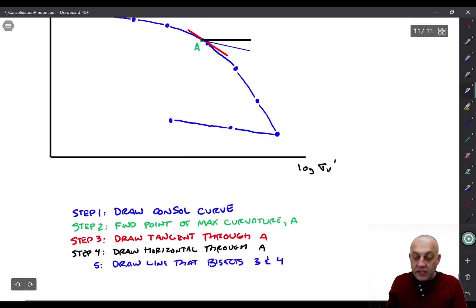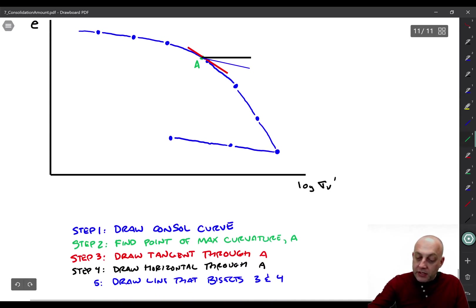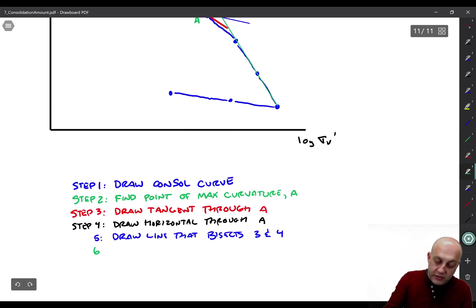Alright, and then number six, what we're going to do is backward extrapolate the, let's see, I'm on green now. We're going to backward extrapolate the normal consolidation line. So here's, you know, that's kind of like the normally consolidated region right there, where we are clearly in the high pressure elastoplastic portion of the curve. So here's six, backward extrapolate the normal consolidation line, or NCL.